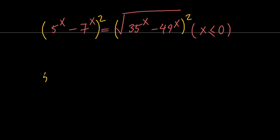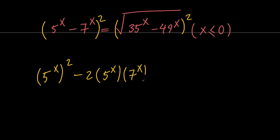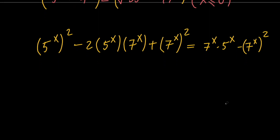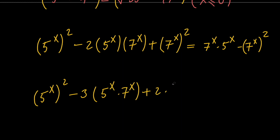Squaring both sides, we get (5 to the x) squared minus 2 times 5 to the x times 7 to the x plus (7 to the x) squared equals 35 to the x minus 49 to the x, which can be written as 7 to the x times (5 to the x minus 7 to the x) squared. Moving everything to the same side, we get (5 to the x) squared minus 3 times 5 to the x times 7 to the x plus 2 times (7 to the x) squared equals 0.